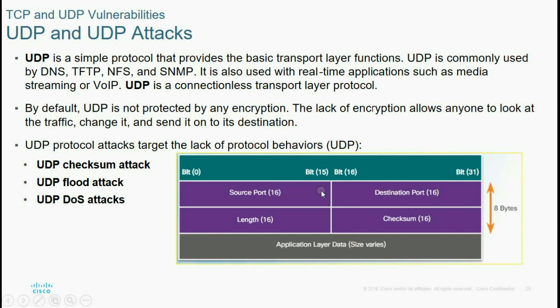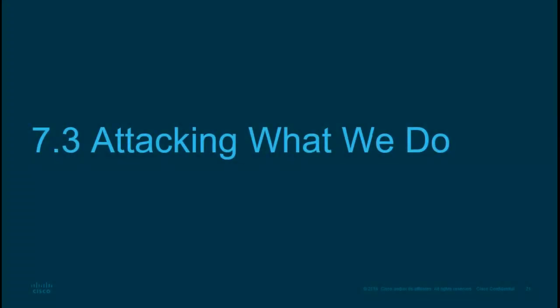UDP is a simple protocol providing basic transport layer functions, commonly used by DNS, TFTP, and SNMP, as well as real-time applications such as media streaming and VoIP. UDP is connectionless and does not provide the protections of TCP. The lack of encryption allows anyone to look at traffic, identify the source and destination, and exploit the lack of protocol behavior — for example, UDP flood attacks.